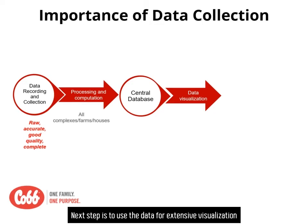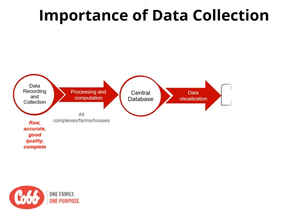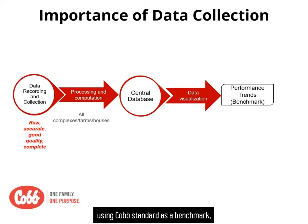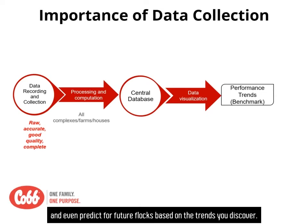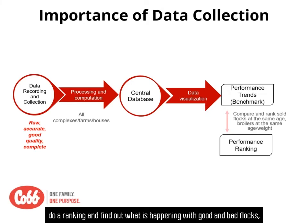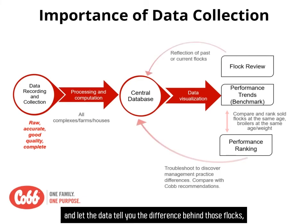The next step is to use the data for extensive visualization or analysis to help you get the information you need. You can establish performance trends on breeders or broilers, use KPI standards as a benchmark, and even predict for future flocks based on the trends you discover. After this, do a ranking and find out what is happening with good and bad flocks, and let the data tell you the difference behind those flocks, and ultimately make adjustments on your programs to improve your performance.